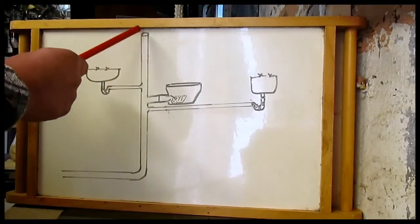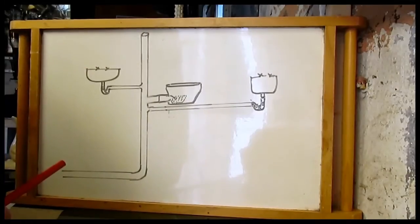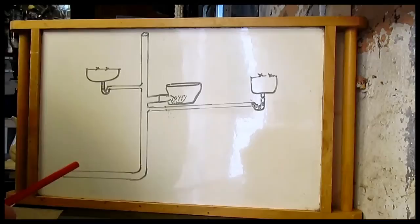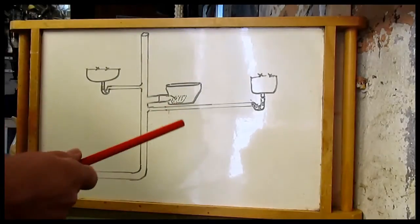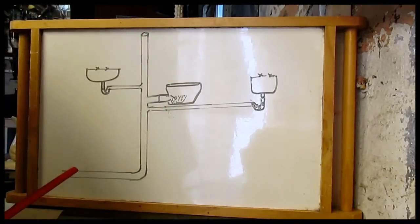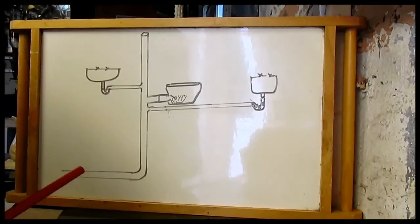If you haven't got an open vent, you need one. But on some occasions where you've got two bathrooms and one's vented, you can get away with a durgo valve on the other one.